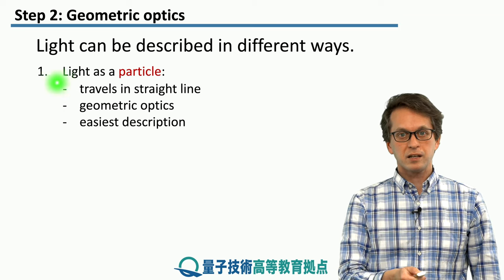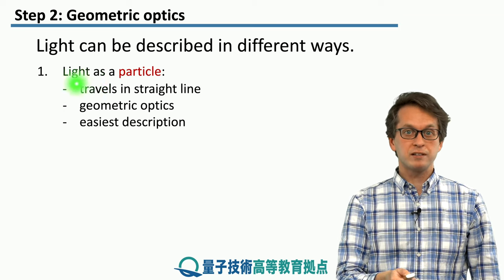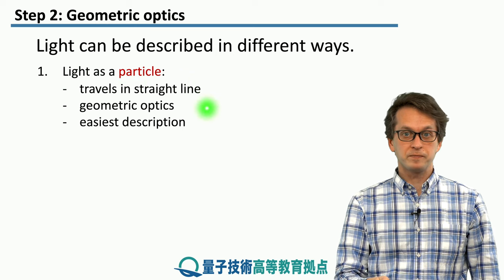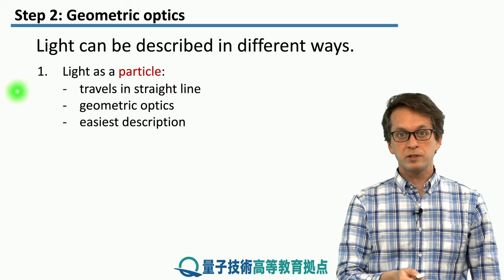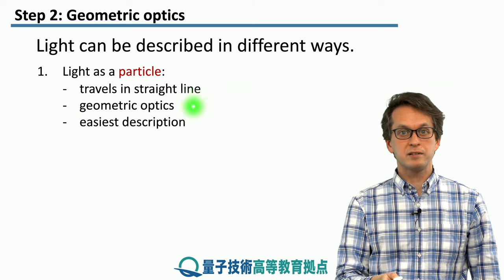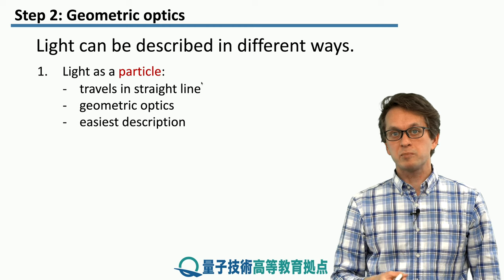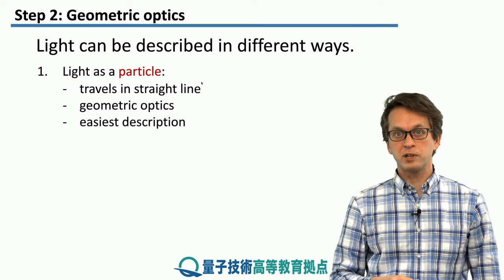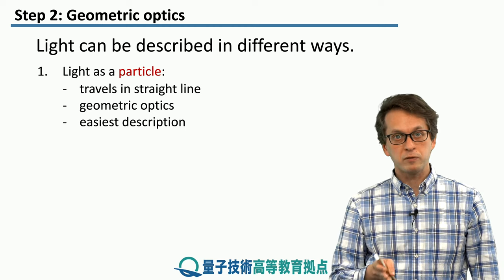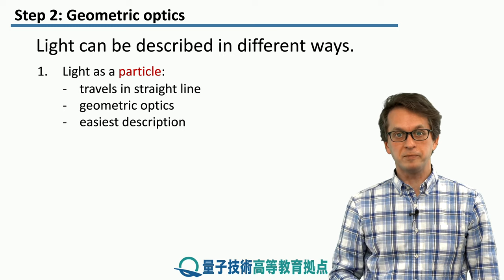Light can be viewed as a particle traveling in straight lines, basically like a ray. To describe that, all we need is geometric optics. This is the easiest scenario. Geometric optics relies on laws of trigonometry to describe how the path of light changes as it travels from one medium to the other.